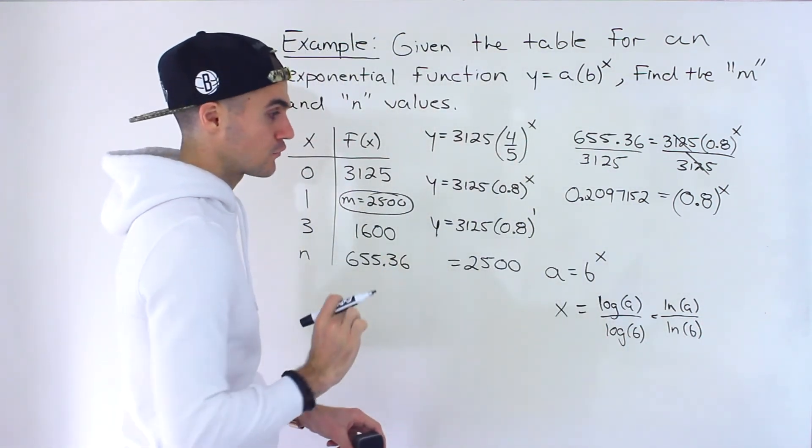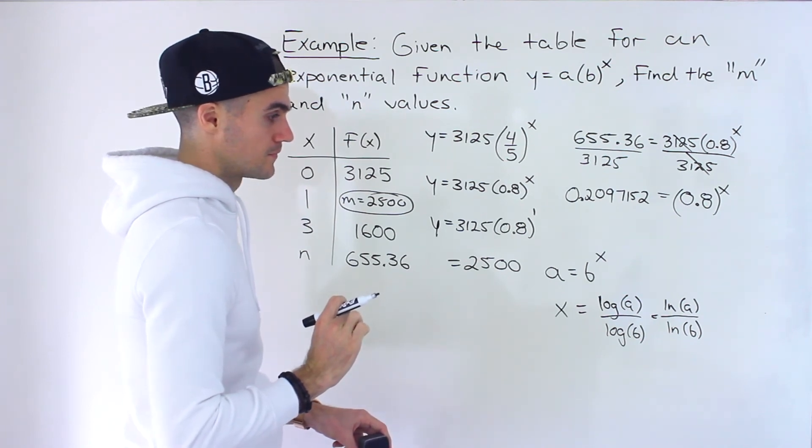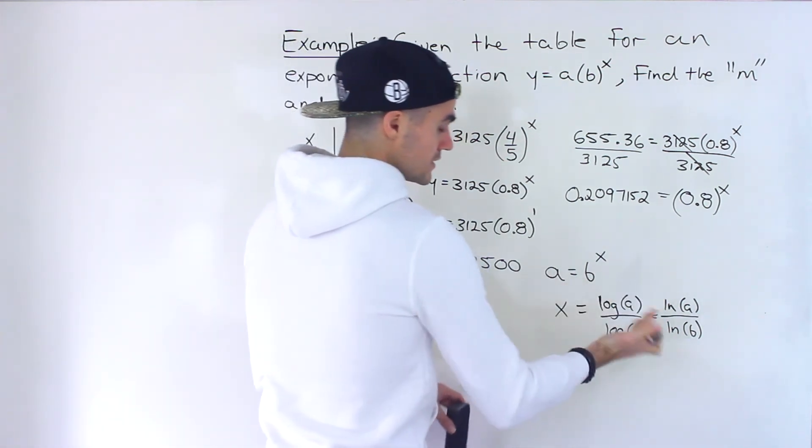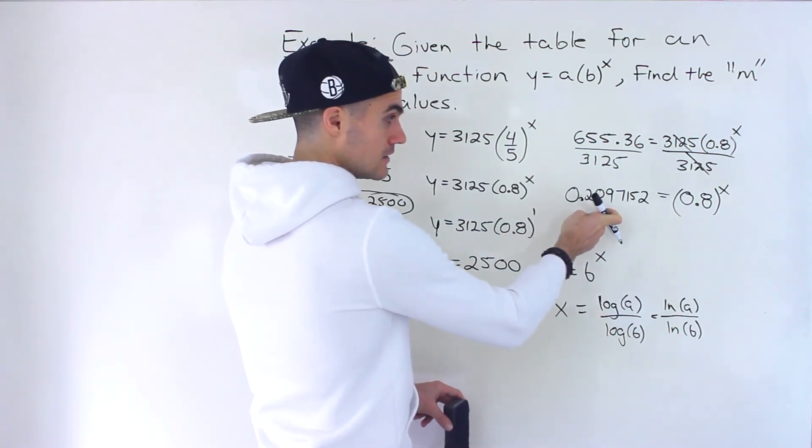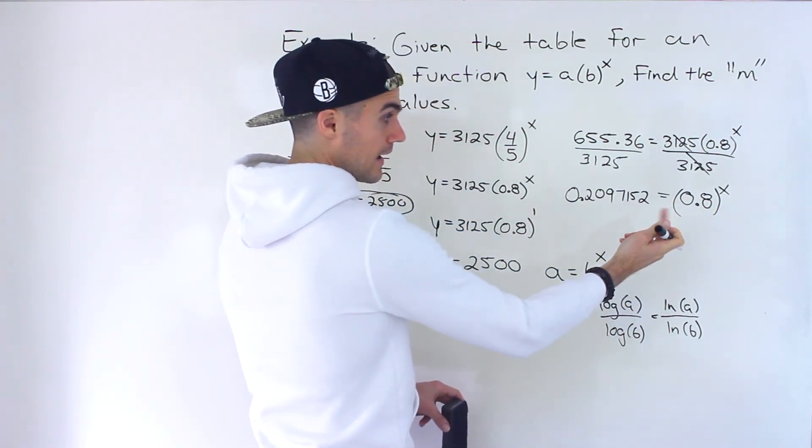ln is just a particular form of a logarithm. So either of these will give you the answer. And so notice in this case, this is like the a and then the b is like the 0.8.